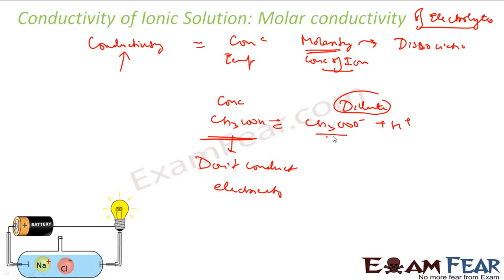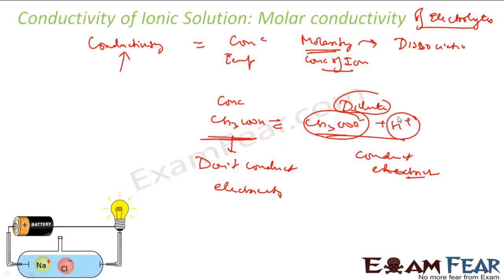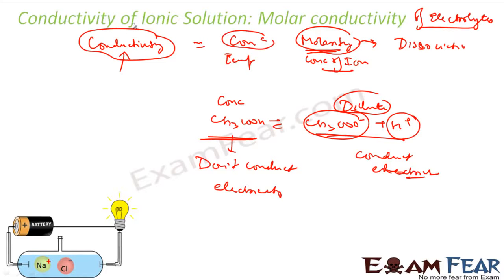The ionic form does conduct electricity. So for a weak electrolyte, this is a very interesting case: decreasing the overall concentration actually increases the concentration of ions. Since conductivity is closely tied to concentration, there is a need to define a term called molar conductivity.